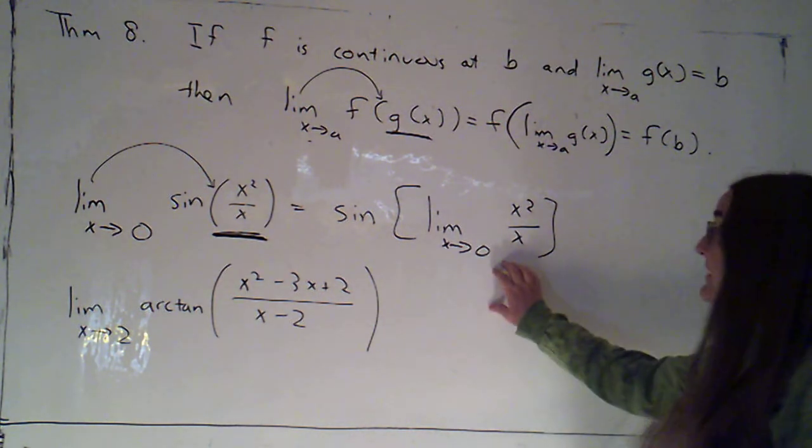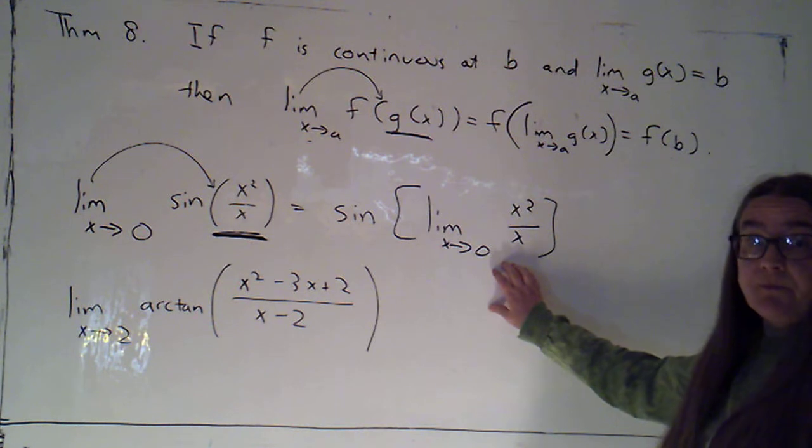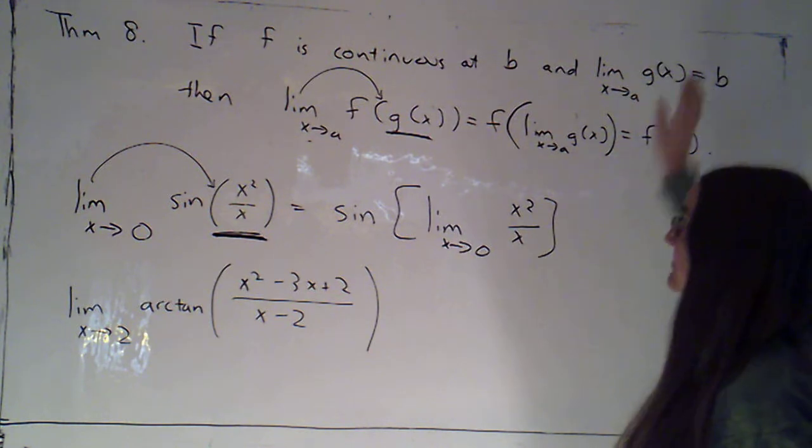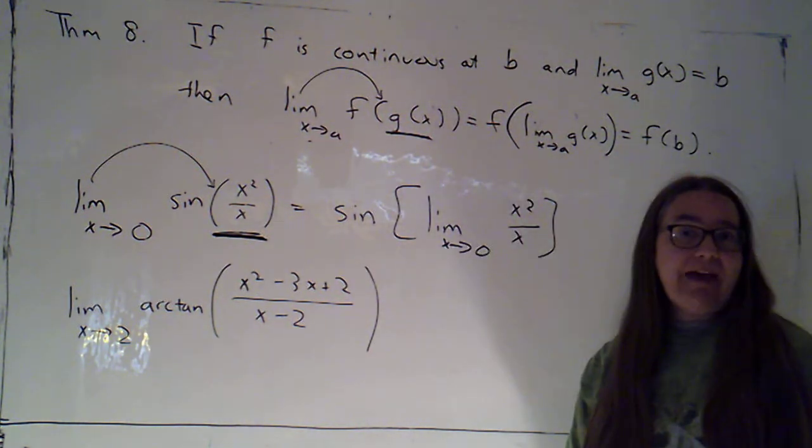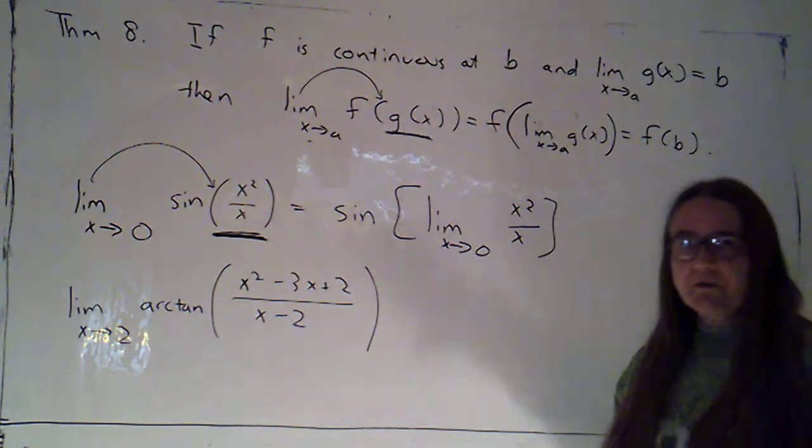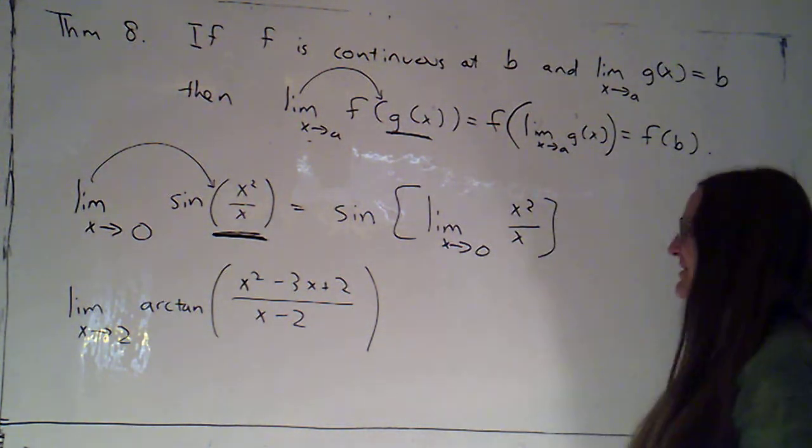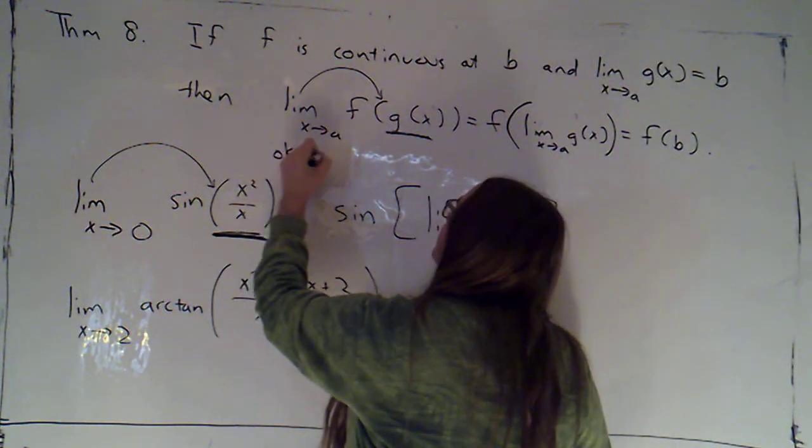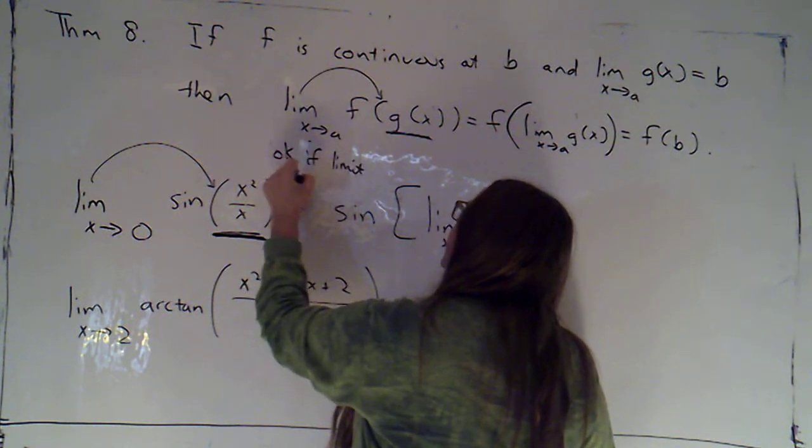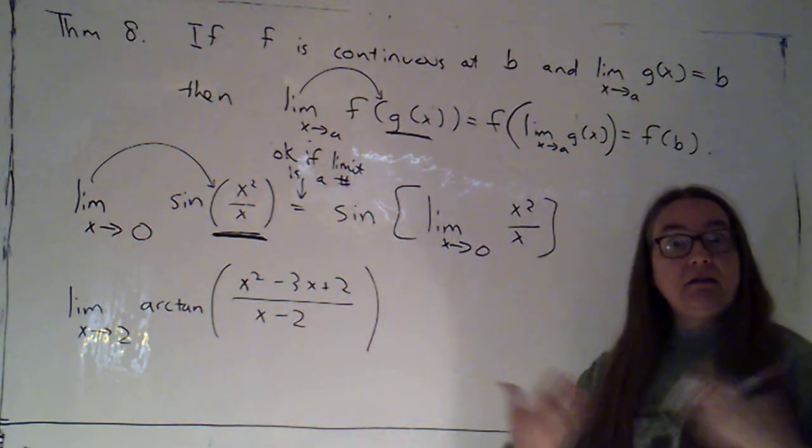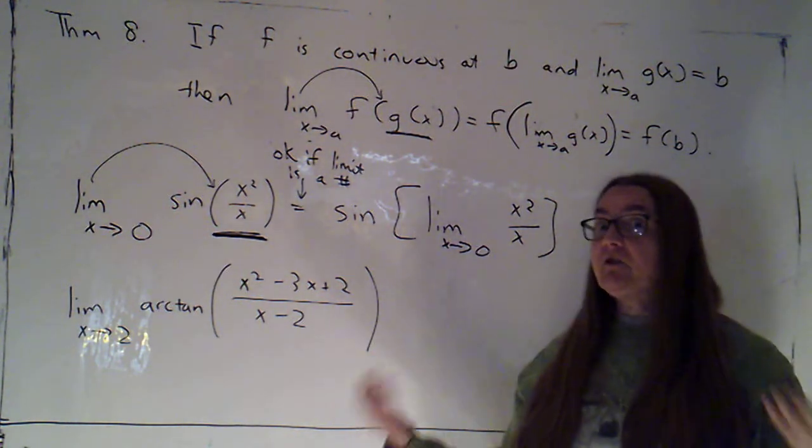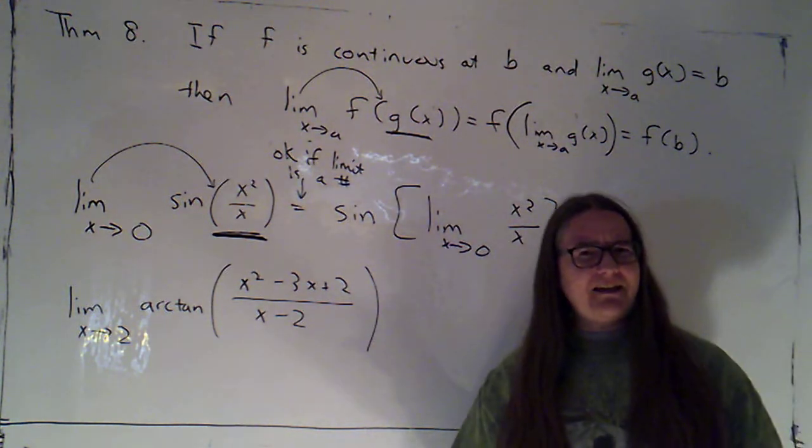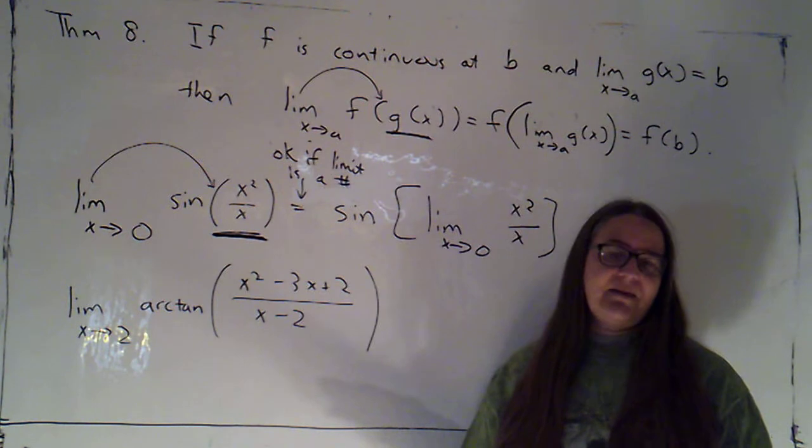Now, I can do that if this limit is a finite number. According to theorem 8, I can do that if I'm going to get some number and my outside part, sine, is continuous at that number. Well, I know the domain of sine is all real numbers and sine is continuous on its domain. So as long as I get any number, this is okay. But I'm going to just make that note. This is okay if the limit is a number. If this limit ends up being infinity or negative infinity or does not exist, then I'm not allowed to do this.